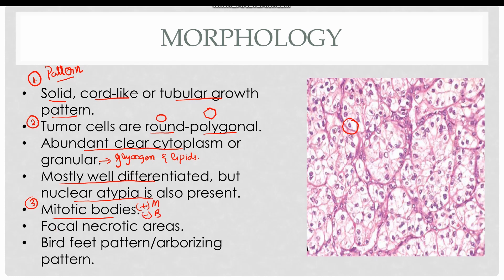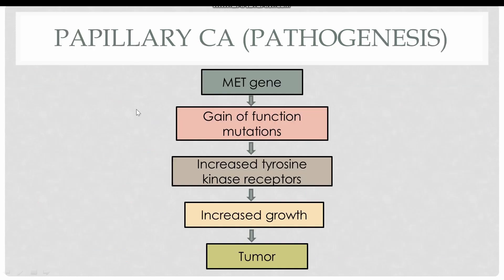Focal necrosis is also a hallmark of malignancy and is absent in almost all benign tumors. A specific identification feature is that renal cell carcinoma may invade the renal vein causing left-sided varicocele; this pattern of invasion is called the bird feet pattern or ergorizing pattern. The tumor might also extend into the vena cava and then into the right heart.